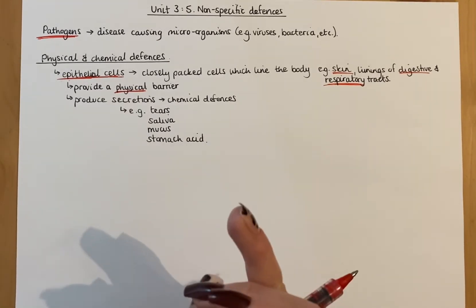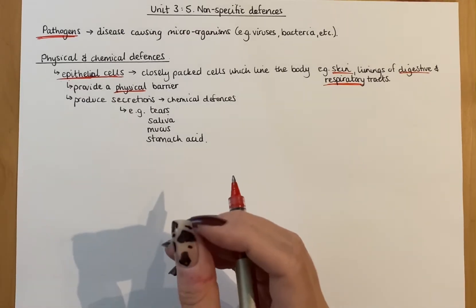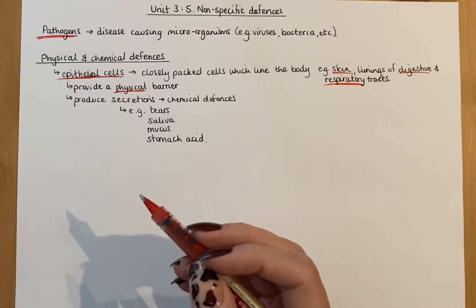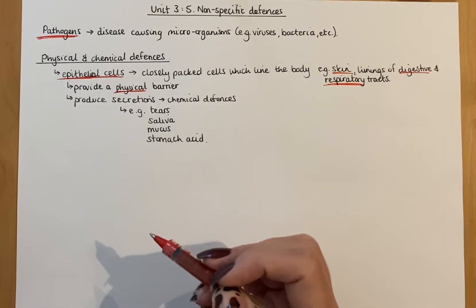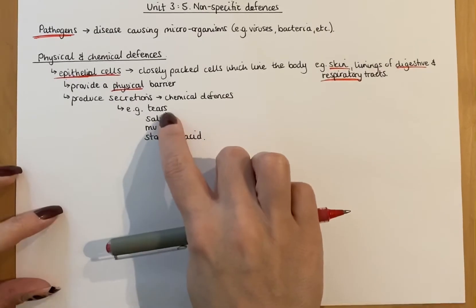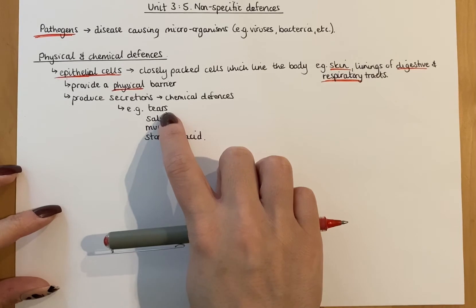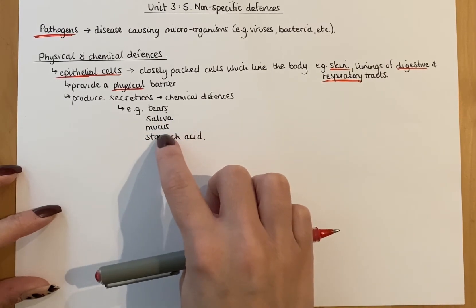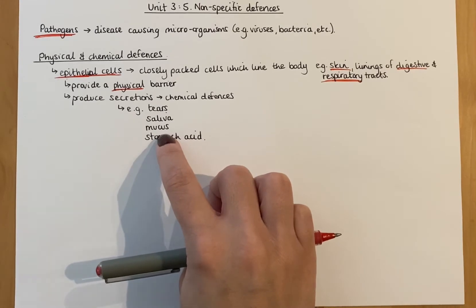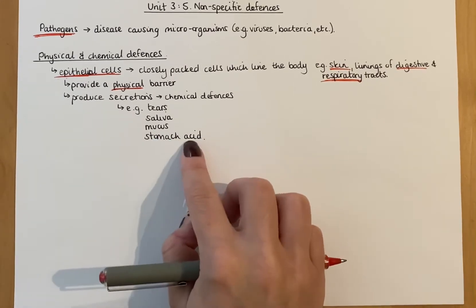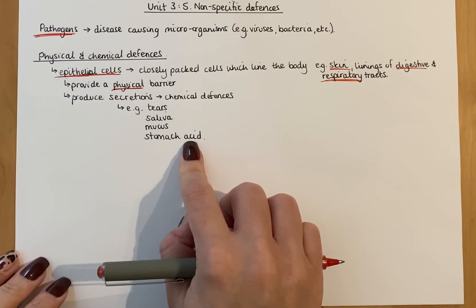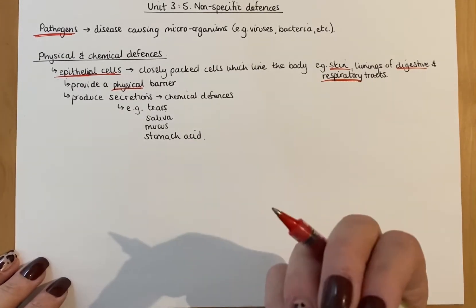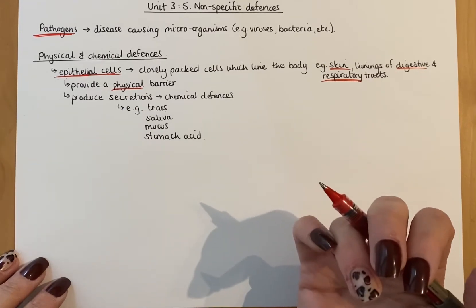As well as that, epithelial cells also produce secretions - liquids that they release. These are chemical defenses because they're made up of chemicals that kill pathogens. Things like tears, which are really salty because salt tends to kill pathogens, saliva, mucus in your stomach, digestive tract and respiratory tract, and also stomach acid. Your skin is also slightly acidic, so it produces chemical defenses itself to kill off any pathogens on it.